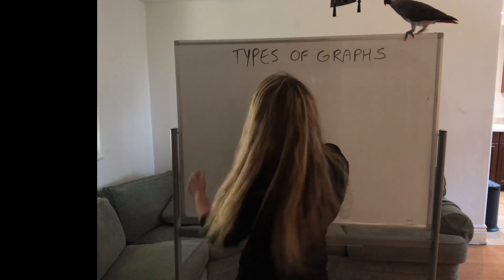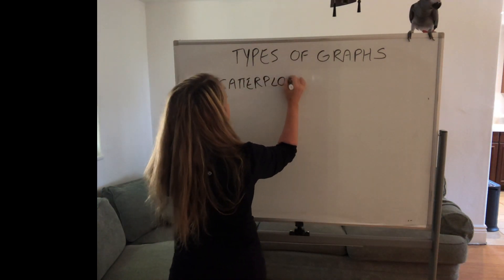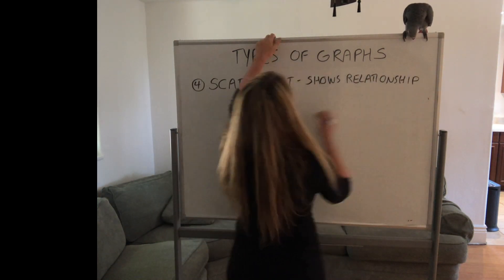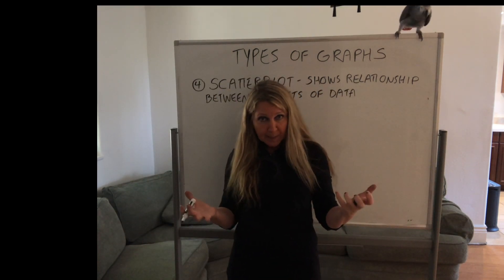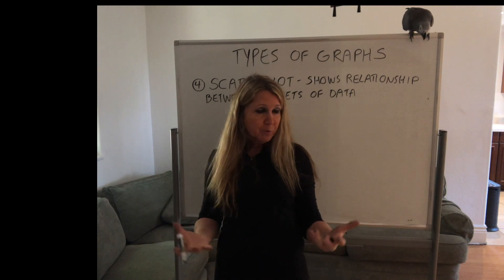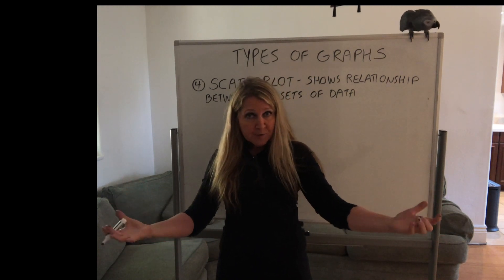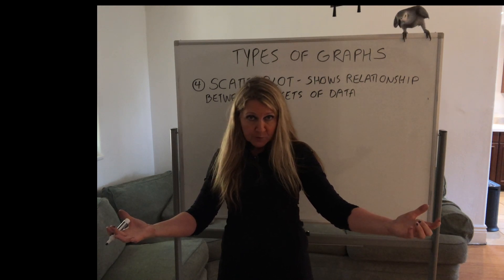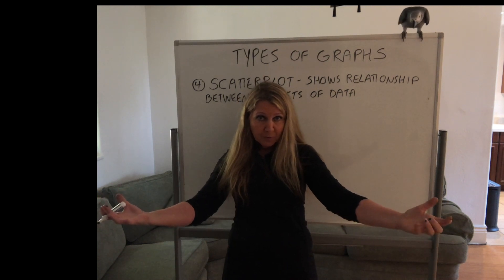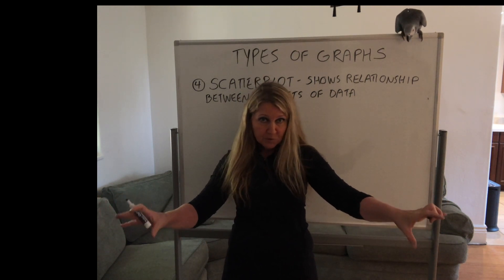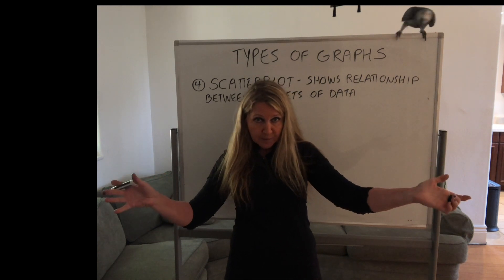So if we think about your paper plane lab, you want to see if there's a relationship between, let's say, the wingspan and how far the plane's traveled. We would use a scatter plot for that, because we're looking for, we want to determine if there's a correlation. In other words, a relationship or is there no correlation, no relationship. So we would create a scatter plot for that.